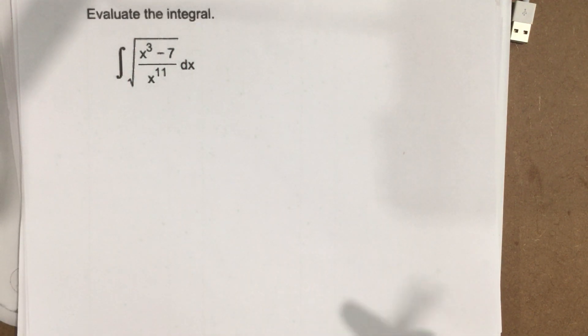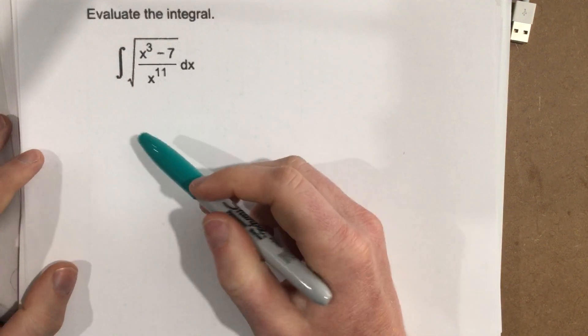So in the previous two examples, they gave us the u substitution. In this example, they're not giving us the u substitution, so we got to come up with it on our own.